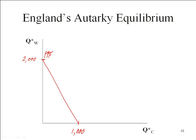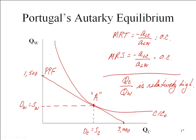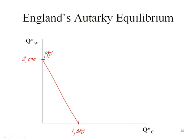What that means, in terms of looking at England, is England's country indifference curve could look exactly the same as what we have here. I just want you to think about the slope of the production possibilities frontier here in Portugal and the slope here in England. The tangency for England has to be to the left of where it is for Portugal. So this is a country indifference curve for England that maximizes consumers' economic well-being or utility. We can still call this point A for England.